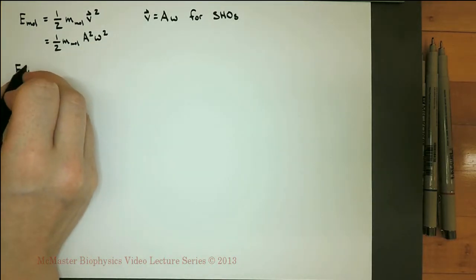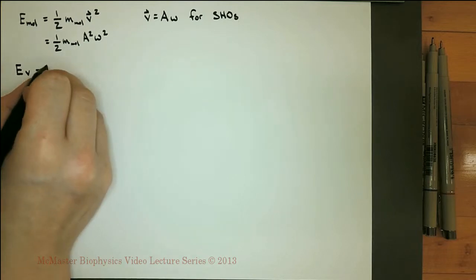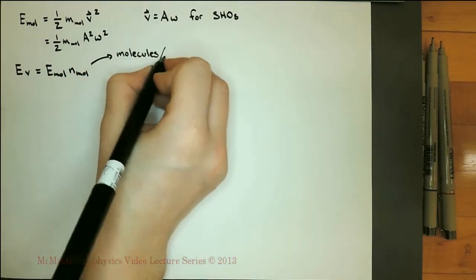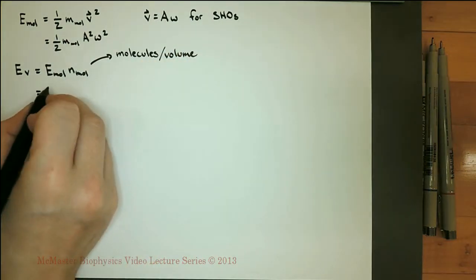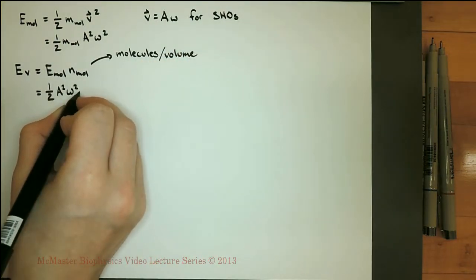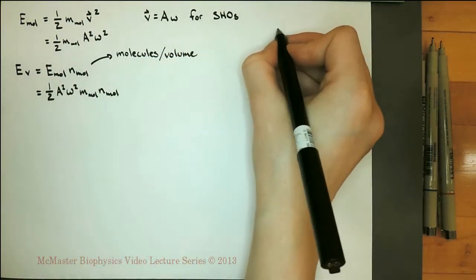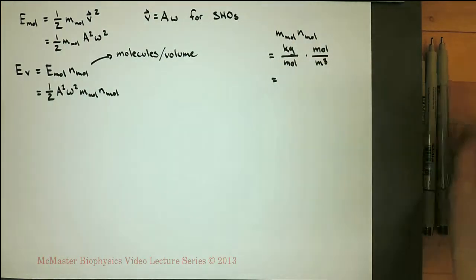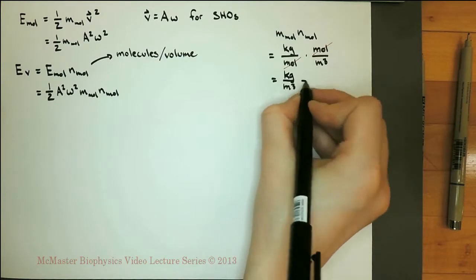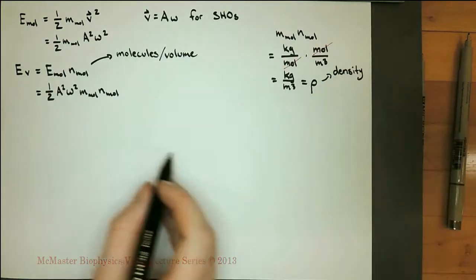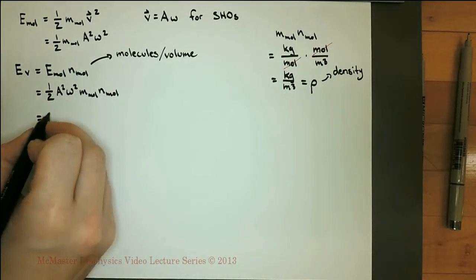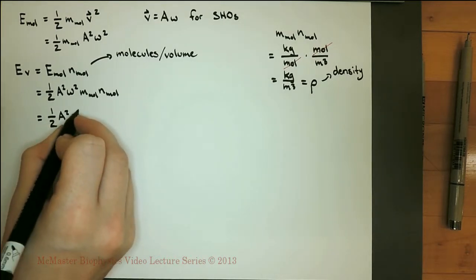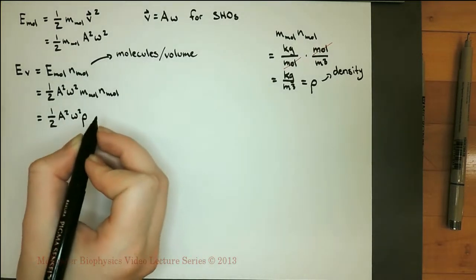The energy per unit volume is equal to the energy of a single molecule times the number of molecules per unit volume. Substituting in the energy per molecule from above, the mass of an individual molecule times the number of molecules per unit volume equals the density. So the energy per unit volume is equal to one half of the amplitude squared times omega squared times the density.